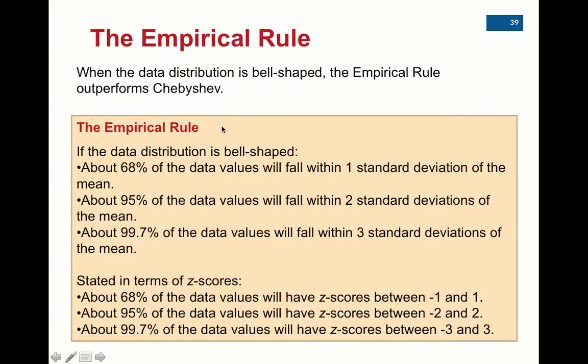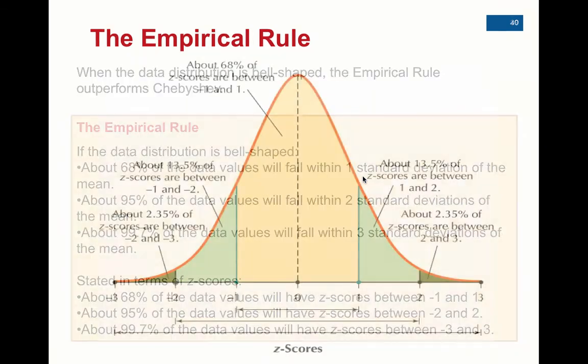So the Empirical Rule. This Empirical Rule will be stated on your formula sheet, these first three lines right here. So if the distribution is bell-shaped, about 68% of the data values fall within one standard deviation of the mean. Let me give you a picture of that.